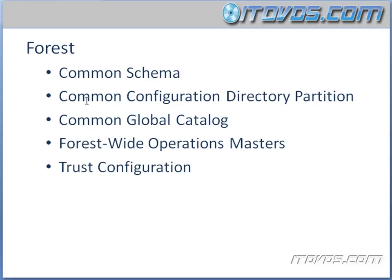All the domains in our forest are also going to share a common configuration directory partition. On each of our domain controllers we have an Active Directory database held in one file, and in that file we have logical partitions. The configuration directory partition is where information about how our whole forest is configured is stored — things like our sites, site links, and replication connections. That is going to be the same on every domain controller in our forest, even if it's a different domain.